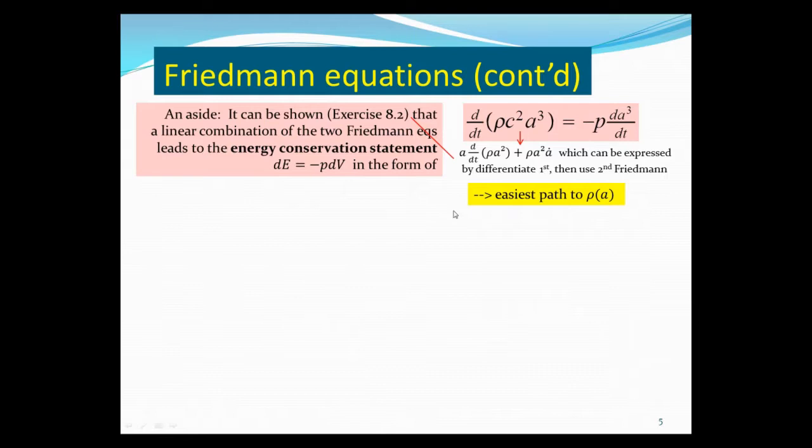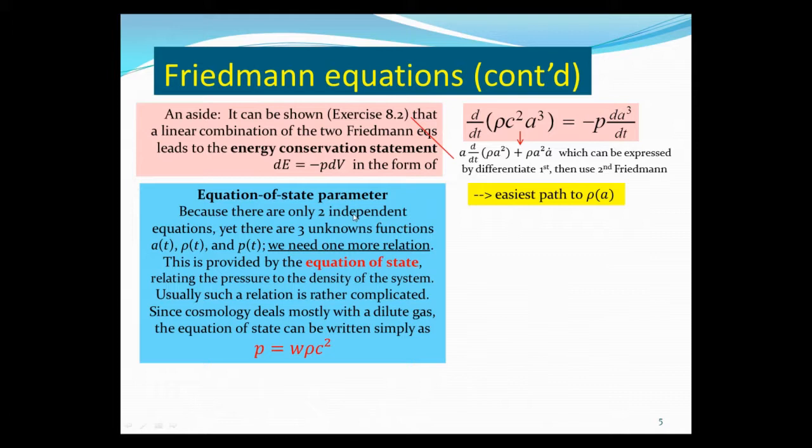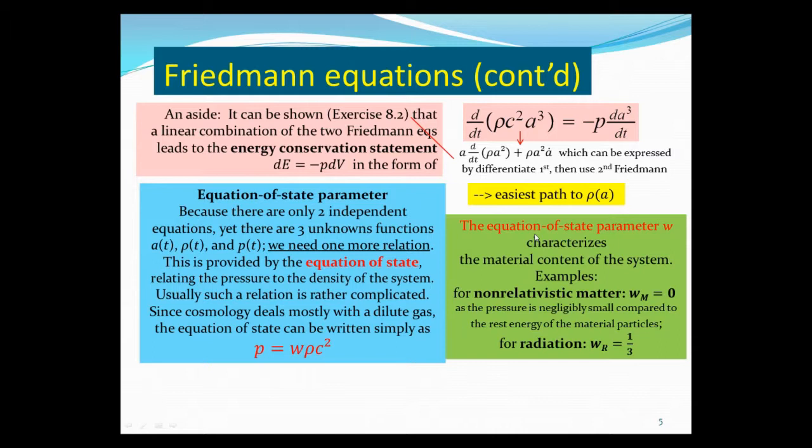Now, there are two independent equations when we talk about the Friedmann equations. There are three unknown functions: the scale factor, the mass density, and the pressure. So we need one more relation, because two equations cannot determine three unknowns, and this provides the so-called equation of state, which relates the pressure to the density of the system. Now, usually, such an equation of state is a rather complicated equation, but in cosmology, because we're dealing with mostly very dilute gas, the equation of state can always be written simply as the pressure equal to energy density multiplied by parameter w, which is what we call equation of state parameter w, which characterizes the material content of the system.